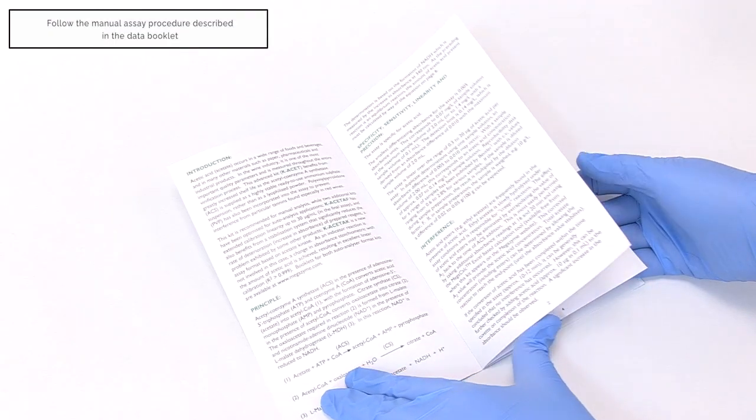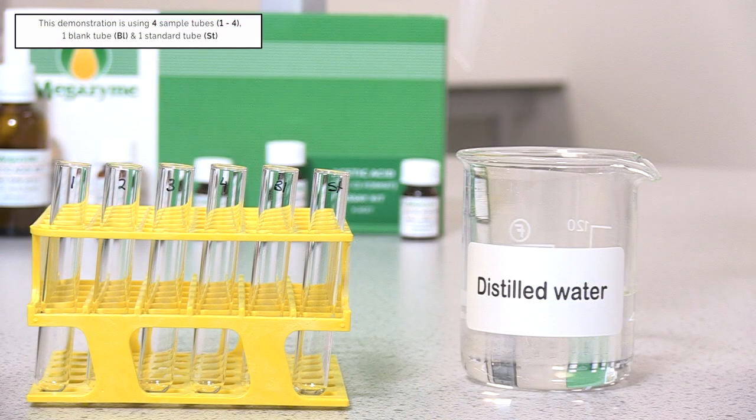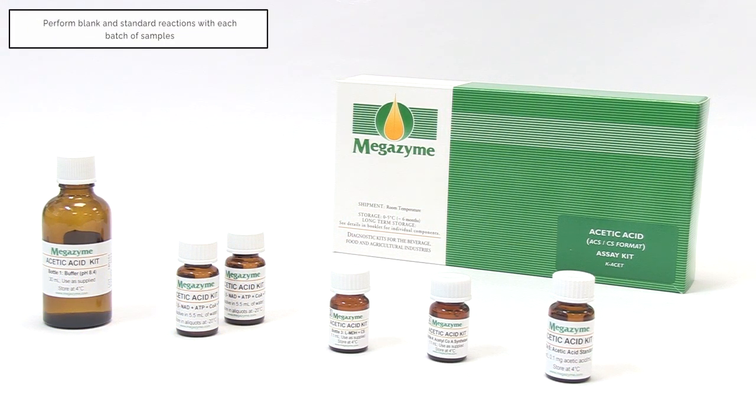Follow the manual assay procedure as described in the data booklet. This demonstration is using 4 sample tubes, 1 blank tube, and 1 standard tube. A blank reaction and a standard reaction must be performed with each batch of samples.